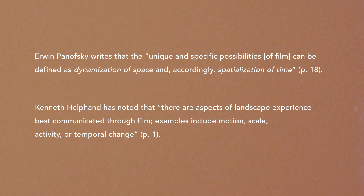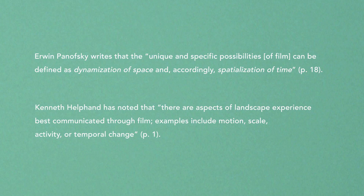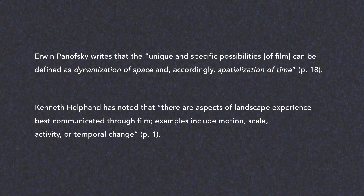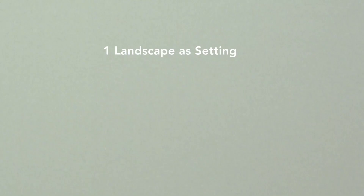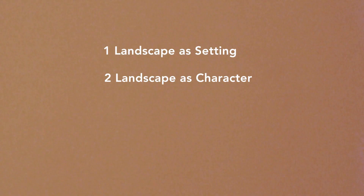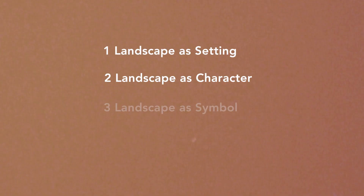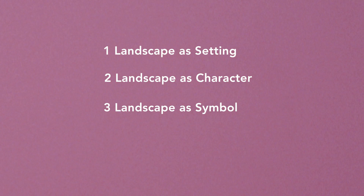experience best communicated through film. Examples include motion, scale, activity, or temporal change. He continues to identify four major ways landscapes have been rendered by cinema: one, landscape as setting; two, landscape as character; three,